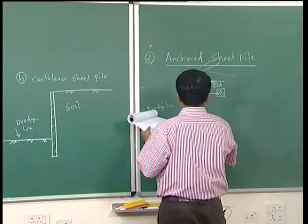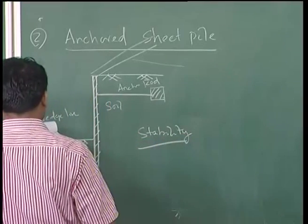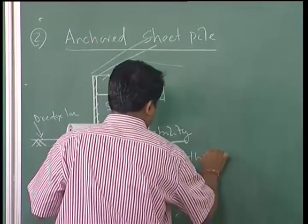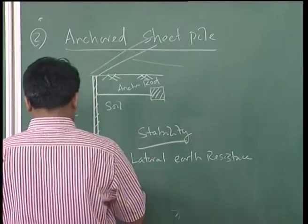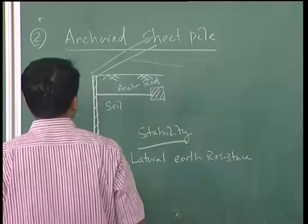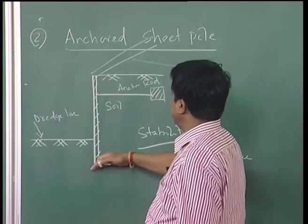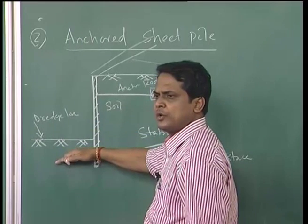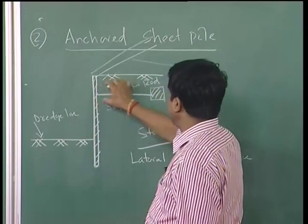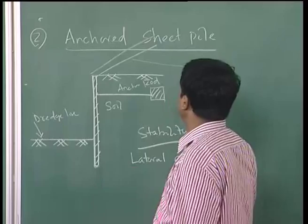Stability is taken care of by the lateral earth resistance. Once this is an anchored sheet pile with the dredge line, stability is governed by both the earth pressure from the soil and the pressure taken by the anchor rod.